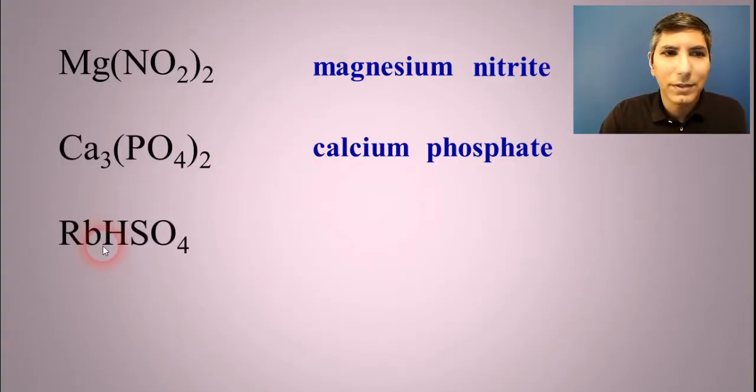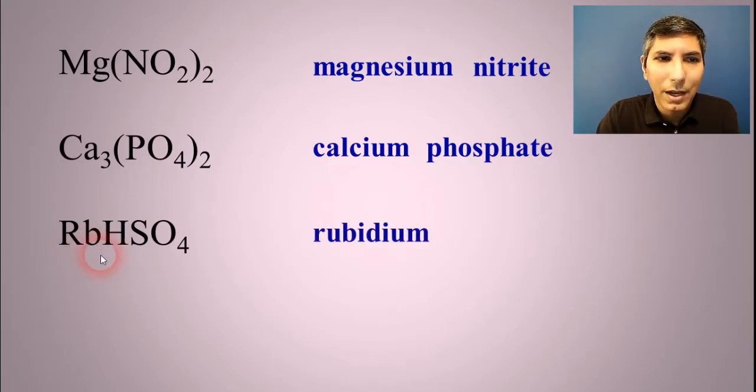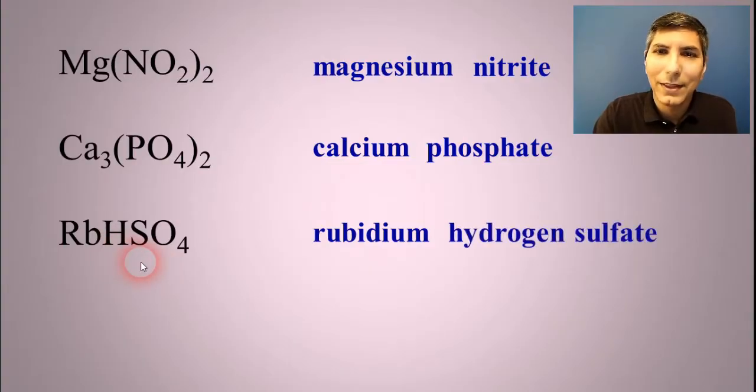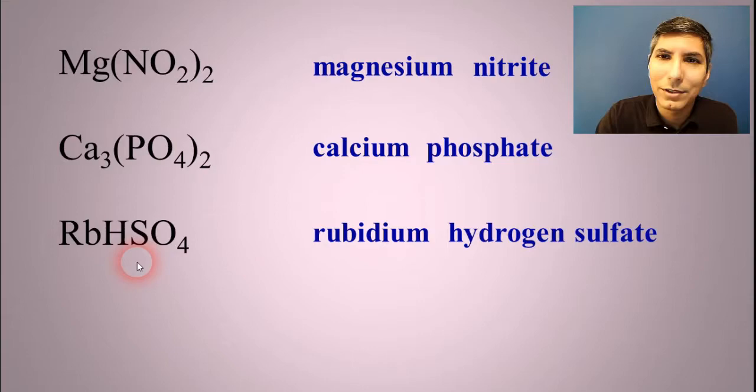Now, how about this one? Same way. Rb is rubidium. And then HSO4, that is on the ion chart. It's called hydrogen sulfate. And that's it. It's called rubidium hydrogen sulfate.